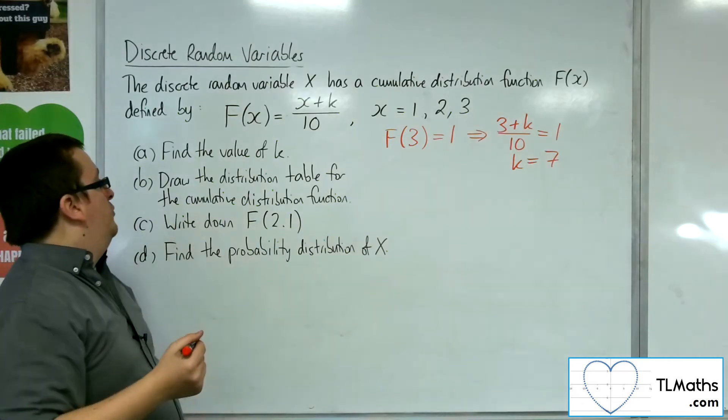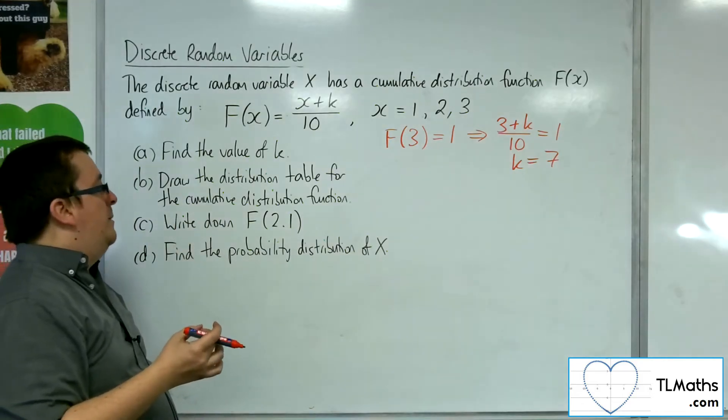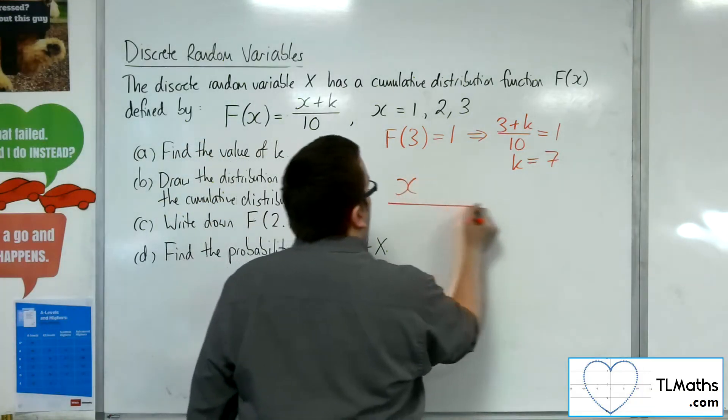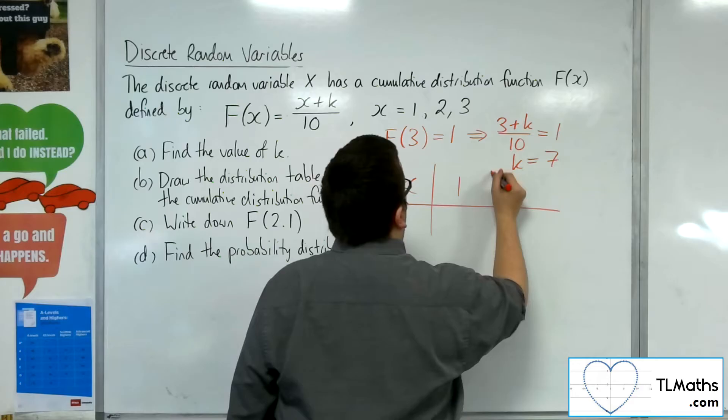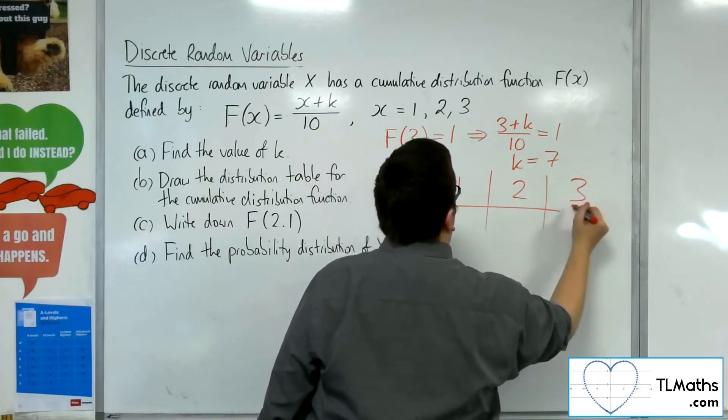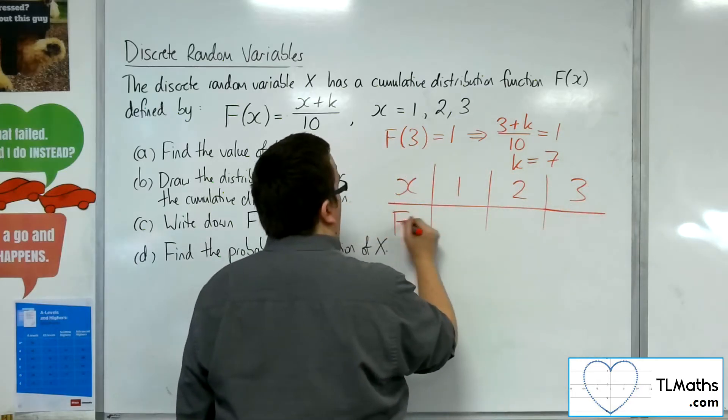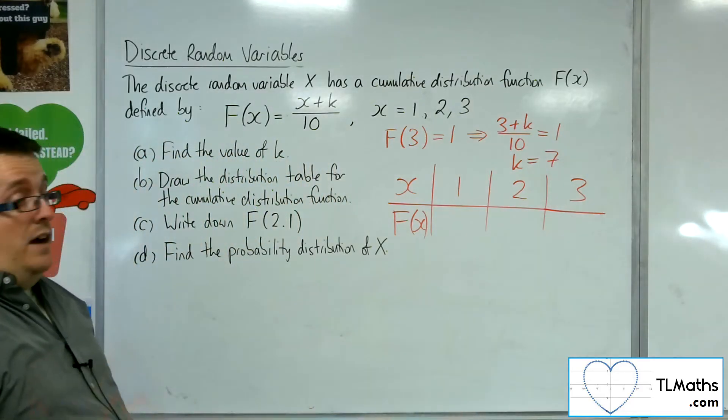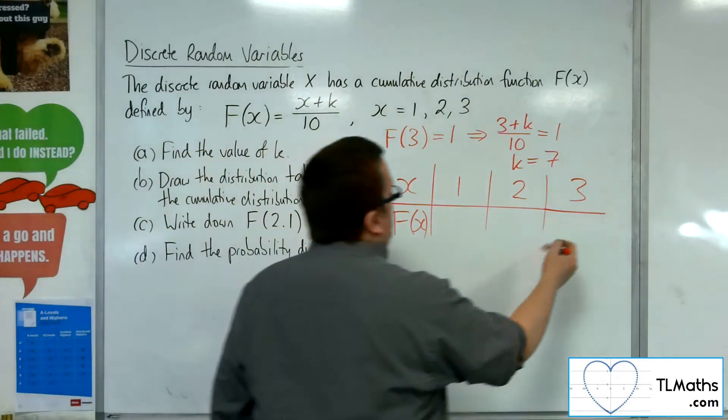So then if I want to draw the distribution table for the cumulative distribution function, then what I have is a set of x's: 1, 2, 3, and f of x. We know that this has got to be 1.